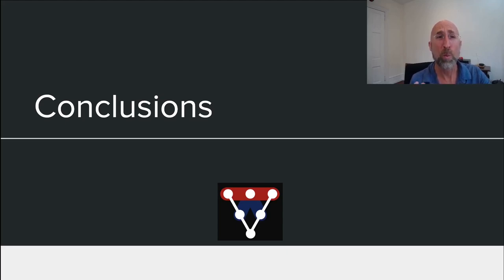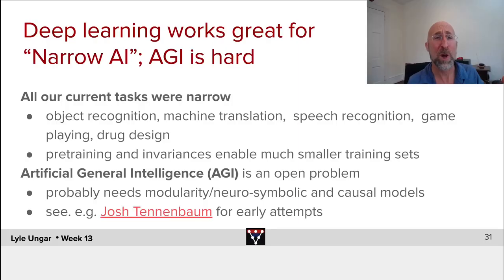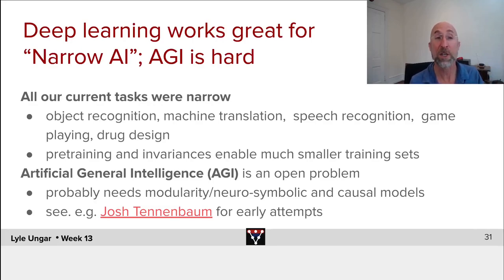We are at the end of the semester almost, well apart from your projects. How can I summarize this in sort of one slide of what we've seen? So far, this entire semester has focused on what I would call narrow tasks — recognizing specific objects, doing machine translation or speech recognition, or game playing or drug design. These are all specific tasks that deep learning systems do really well.